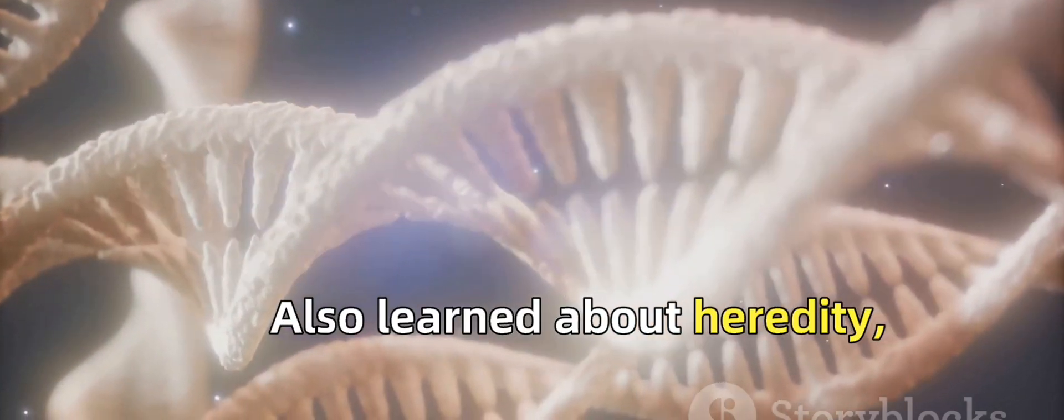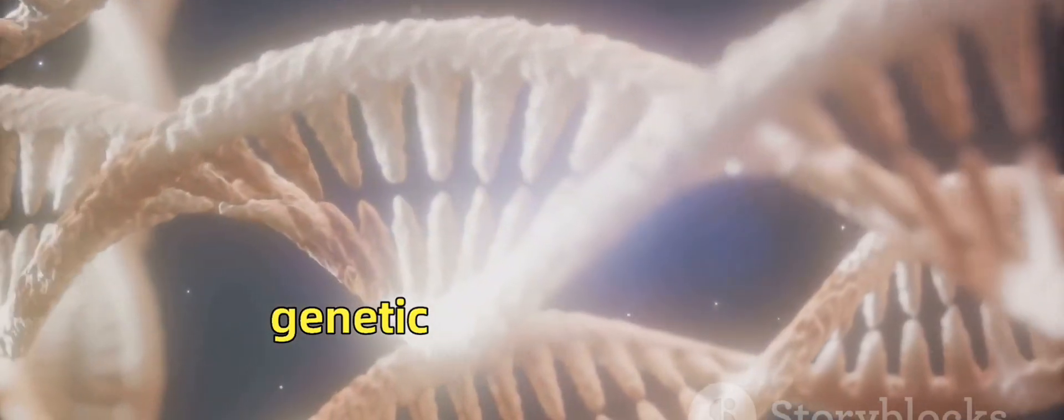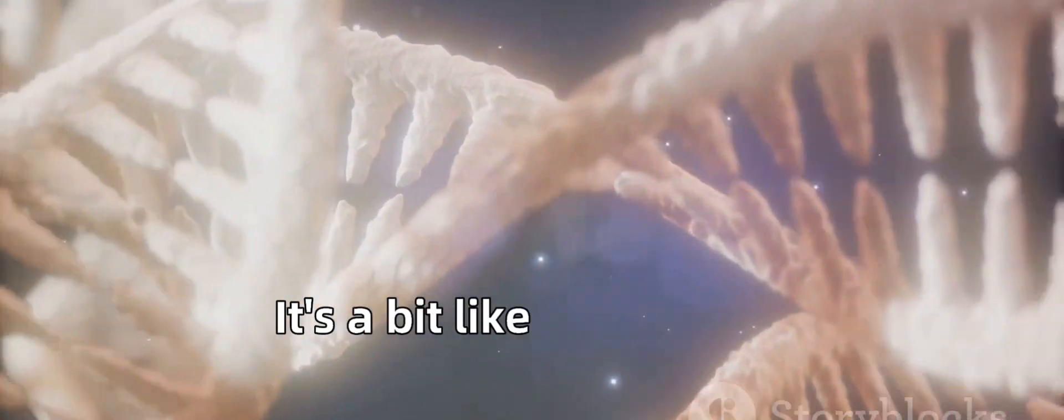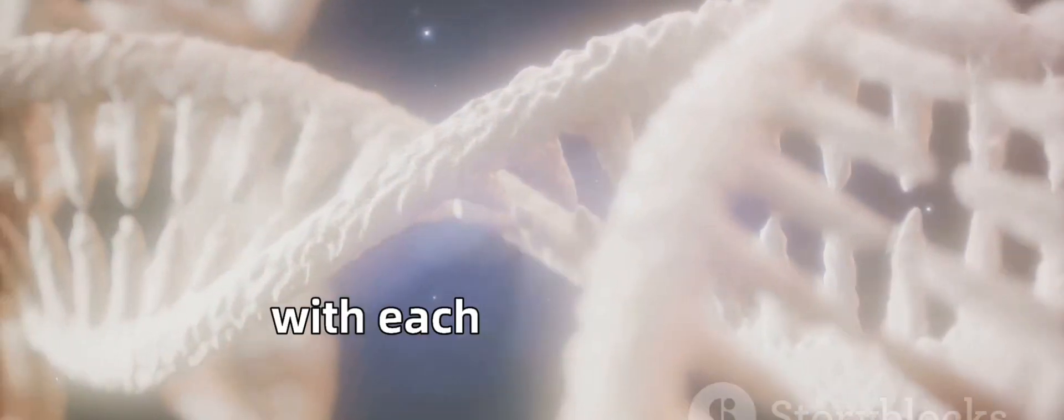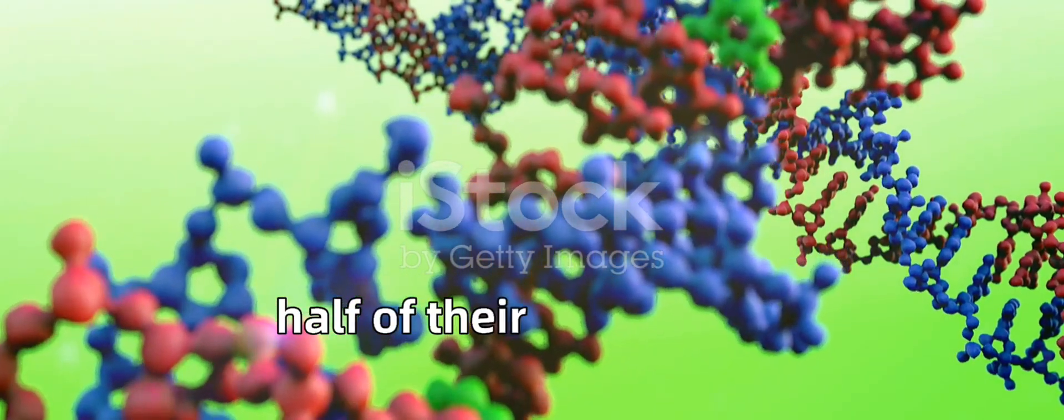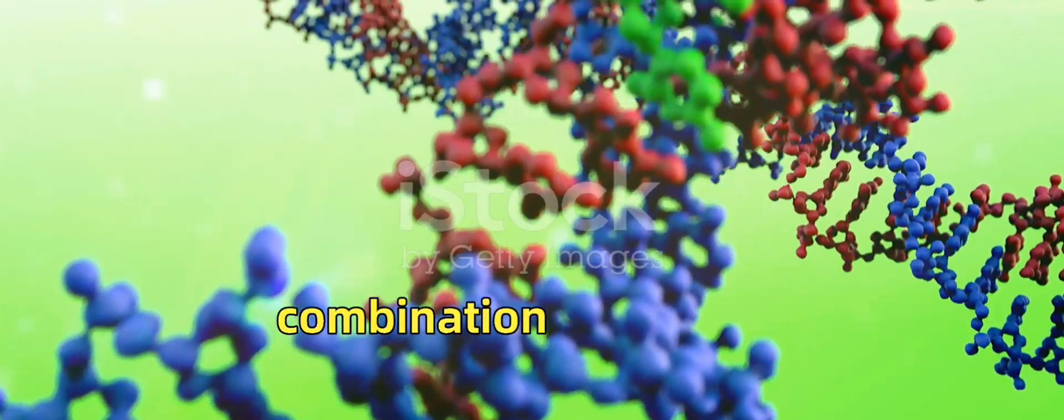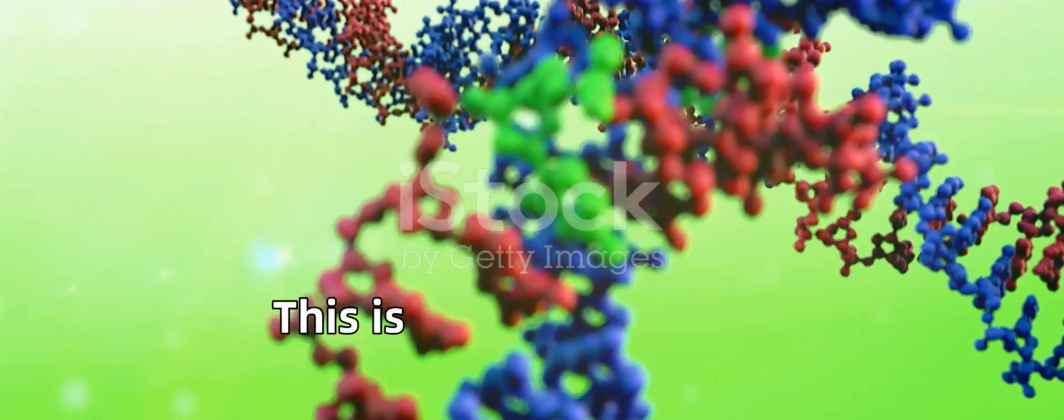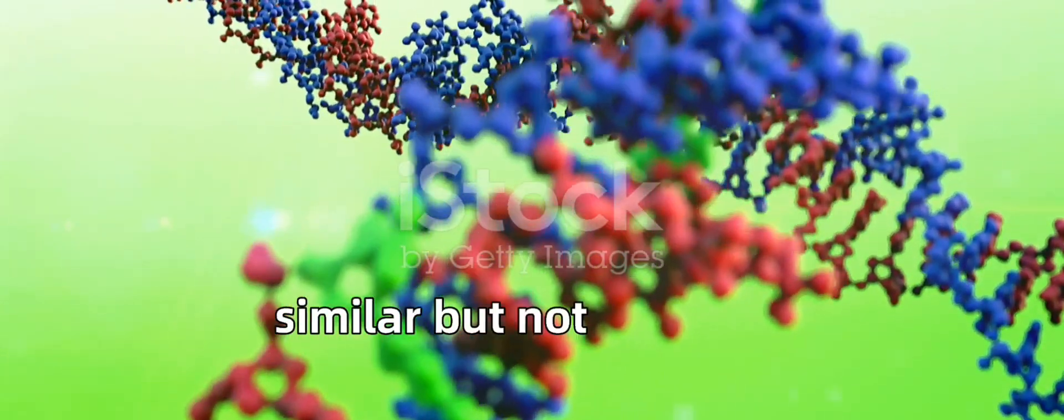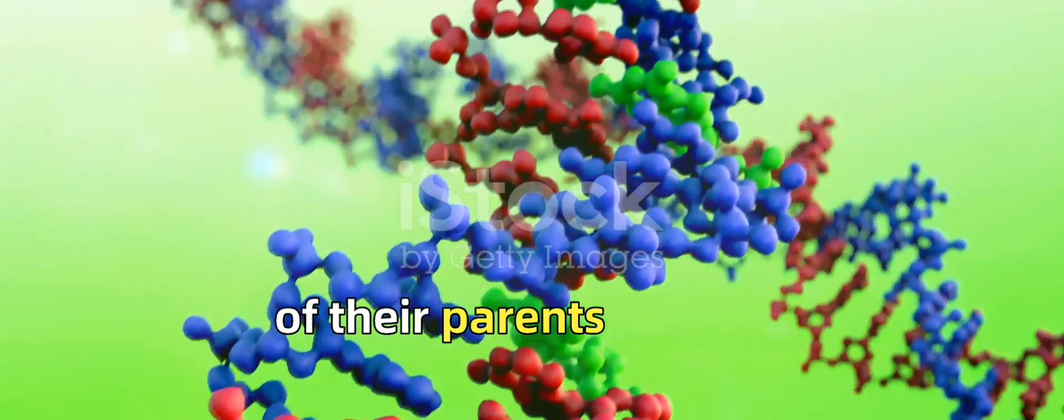We also learned about heredity, the process by which these genetic traits are passed on. It's a bit like a biological lottery, with each parent contributing half of their genes to create a unique combination in their offspring. This is why siblings can look similar, but not identical, each carrying a different mix of their parents' genes.